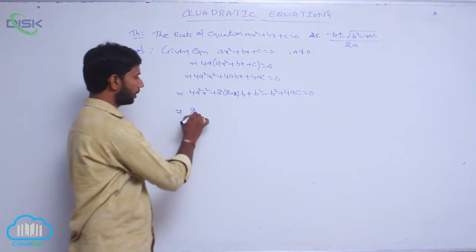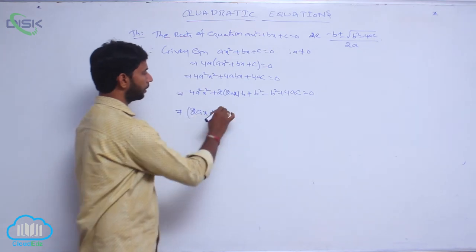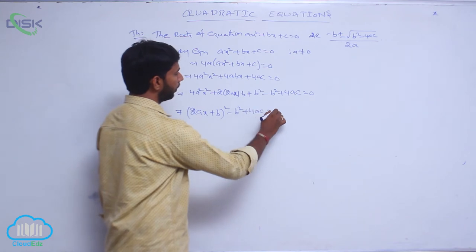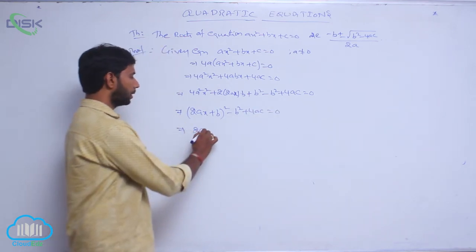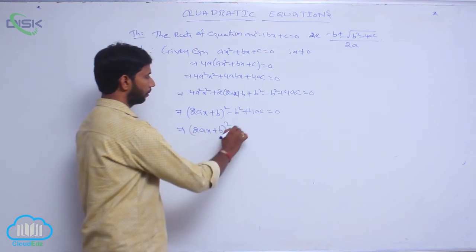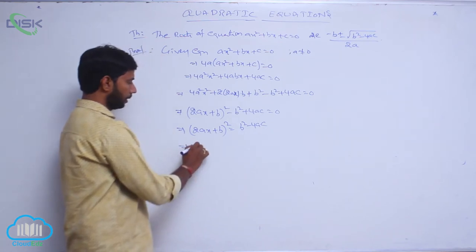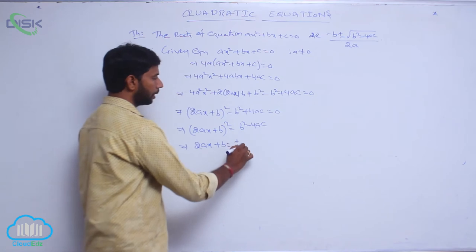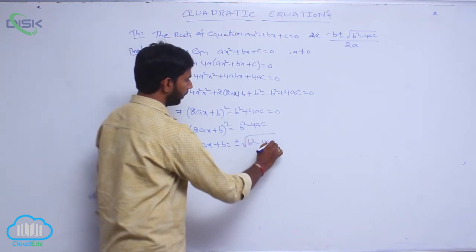The first three terms can be written as (2Ax + B)² minus B² + 4AC = 0. That is, (2Ax + B)² = B² - 4AC, so 2Ax + B = ±√(B² - 4AC).